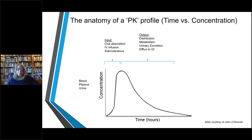A PK profile plots the concentration of your drug as a function of time in a matrix such as blood, plasma, or urine. Input can be oral dosing, IV infusion, or subcutaneous. The output measured is distribution, metabolism, excretion, and efflux-to-GI ratio. This is the starting point for PKPD parameters.